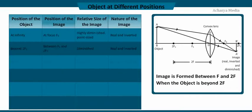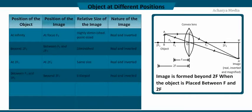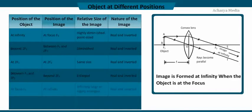When the object is at 2F1, the image is formed at distance 2F from the optical center; the image is real, inverted, and of the same size as the object. When the object is between F and 2F, the image formed is magnified and is formed beyond 2F2 on the other side of the lens. When the object is at F, the refracted rays are parallel and will meet at infinity; thus, the image formed is real, inverted, and magnified.